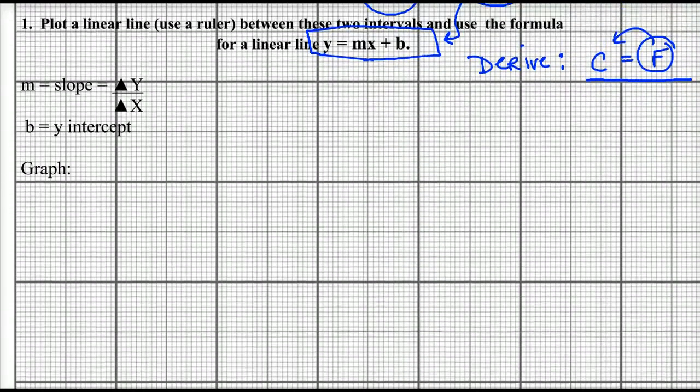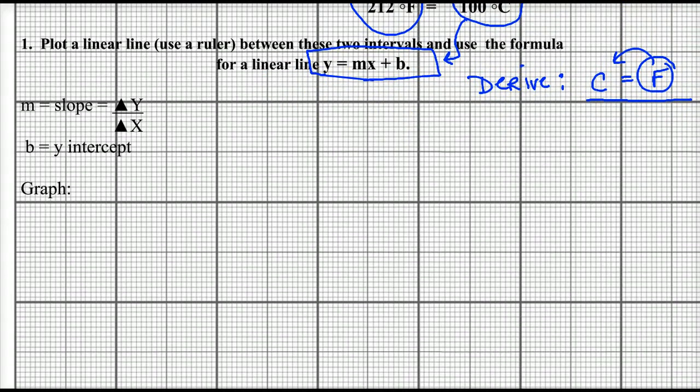What we're going to do is we're going to start with a plot. Since I want to derive a formula that goes Celsius is equal to Fahrenheit, you can see that my y-axis is going to be Celsius and my x-axis is my Fahrenheit. So let's create a graph here that would do so.